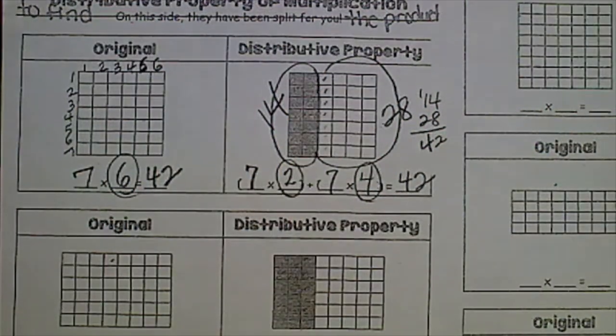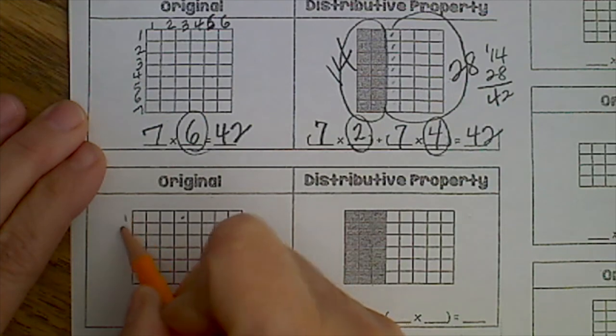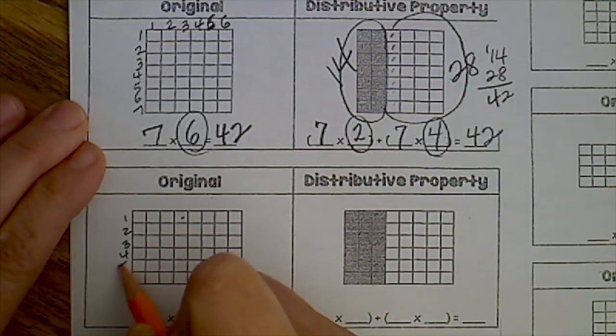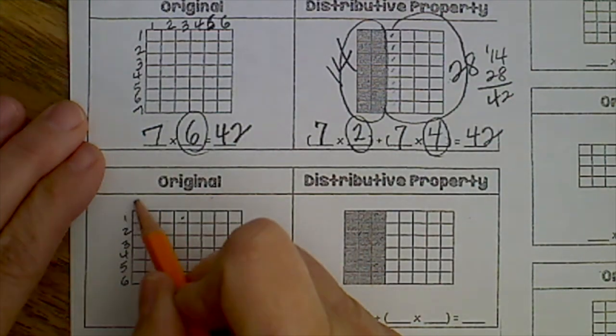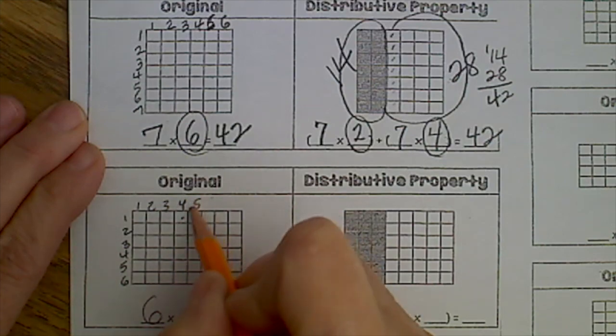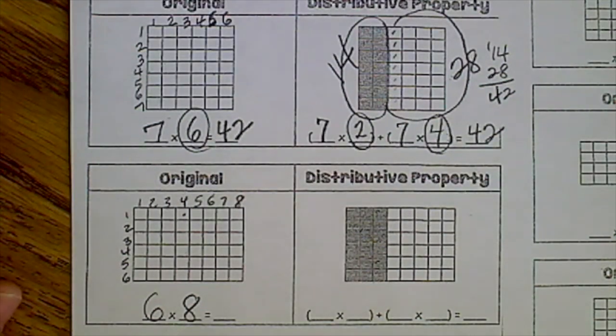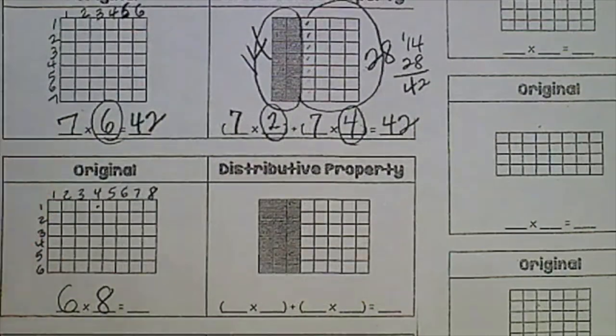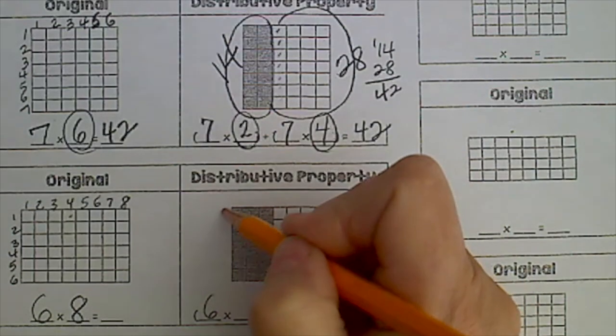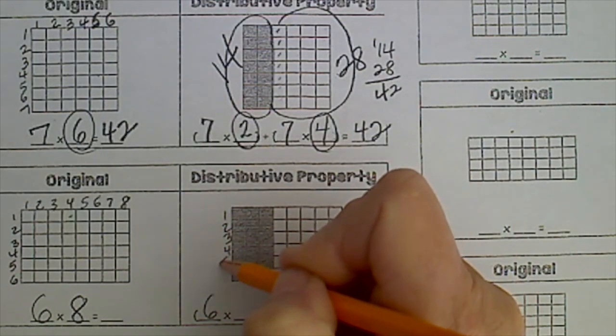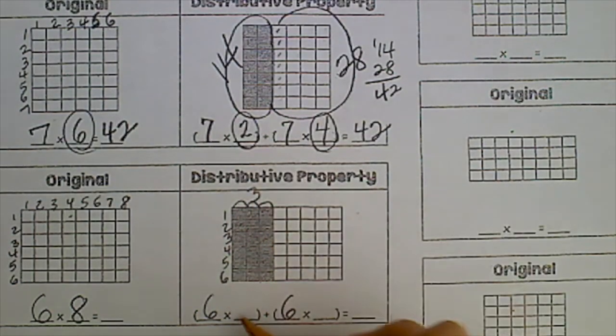Now the second one, we're going to do the same thing. So we're going to count down, there's one, two, three, four, five, six rows, and then how many columns. Maybe you don't know the answer to this, so let's go over here. Now here I can see that there's going to be six rows for both of these. Six rows in this one, there's three.